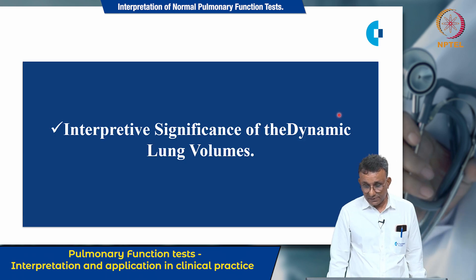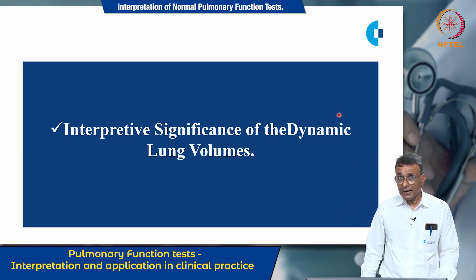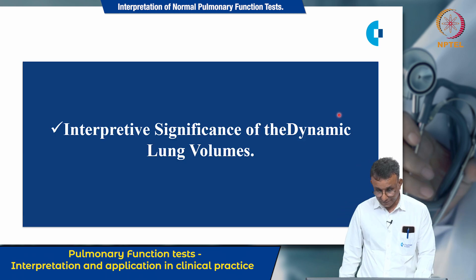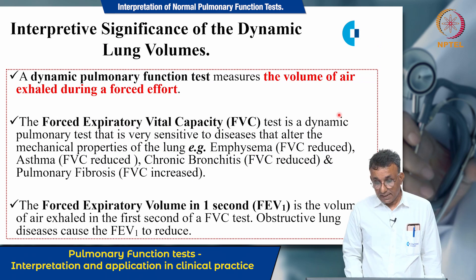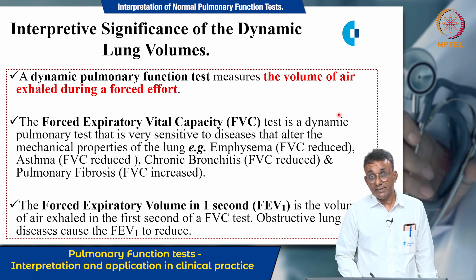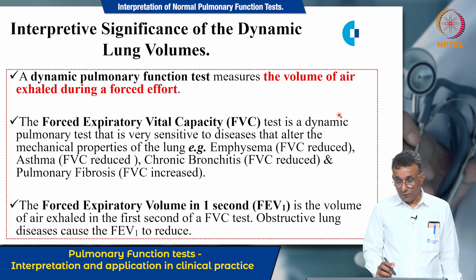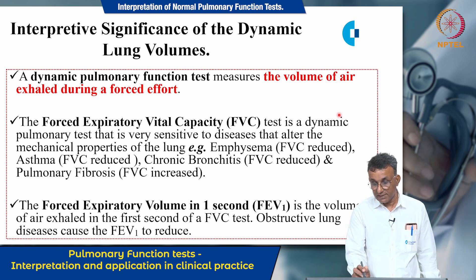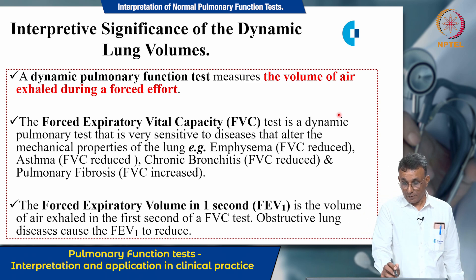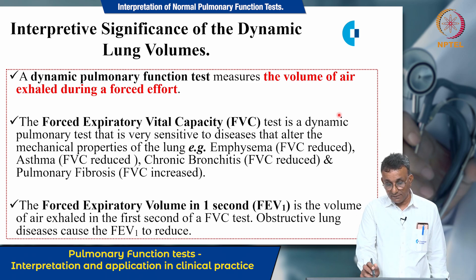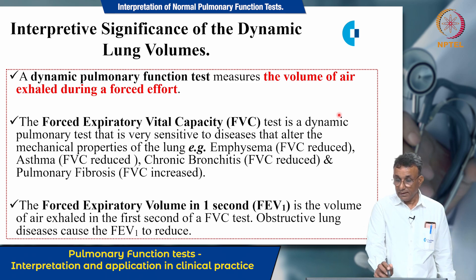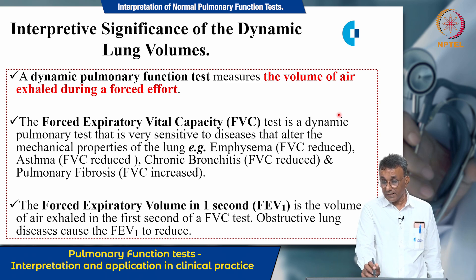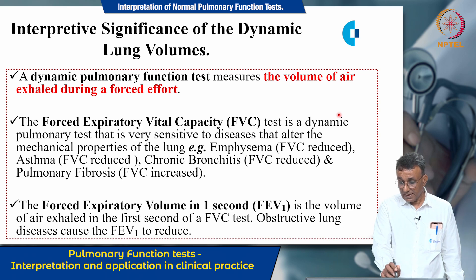Let us look at the interpretive significance of certain dynamic lung volumes. A dynamic pulmonary function test measures the volume of air exhaled during a forced effort. The forced expiratory vital capacity (FVC) is very sensitive to diseases that alter the mechanical properties of the lung — for example, emphysema, asthma, and chronic bronchitis where the FVC is reduced, and pulmonary fibrosis where the FVC is also reduced.